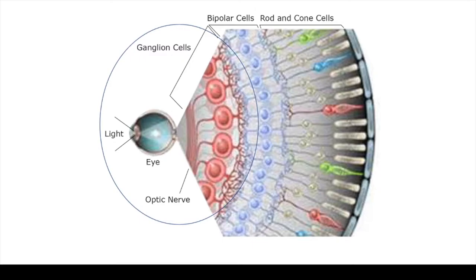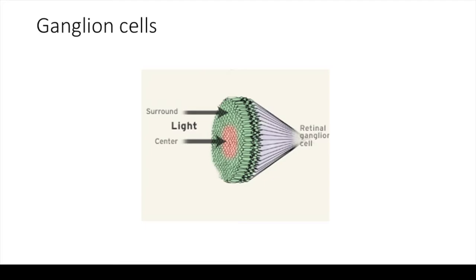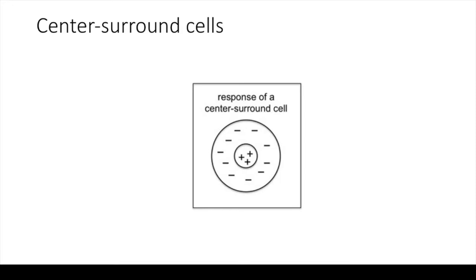Earlier on, Stephen Kufler had discovered that within their receptive field, some ganglion cells in the retina respond well to small spots of light, but not to big spots. The reason is that these cells have what is called a sensitive center and an antagonistic surround. These cells are thus called center surround cells.